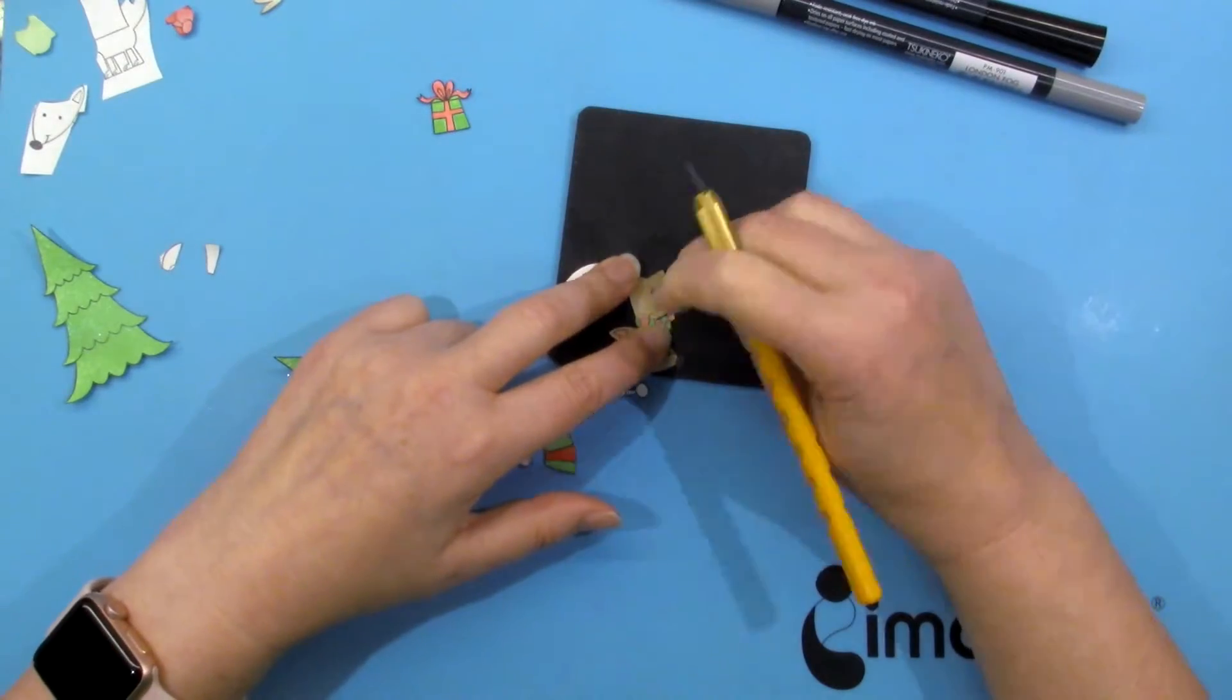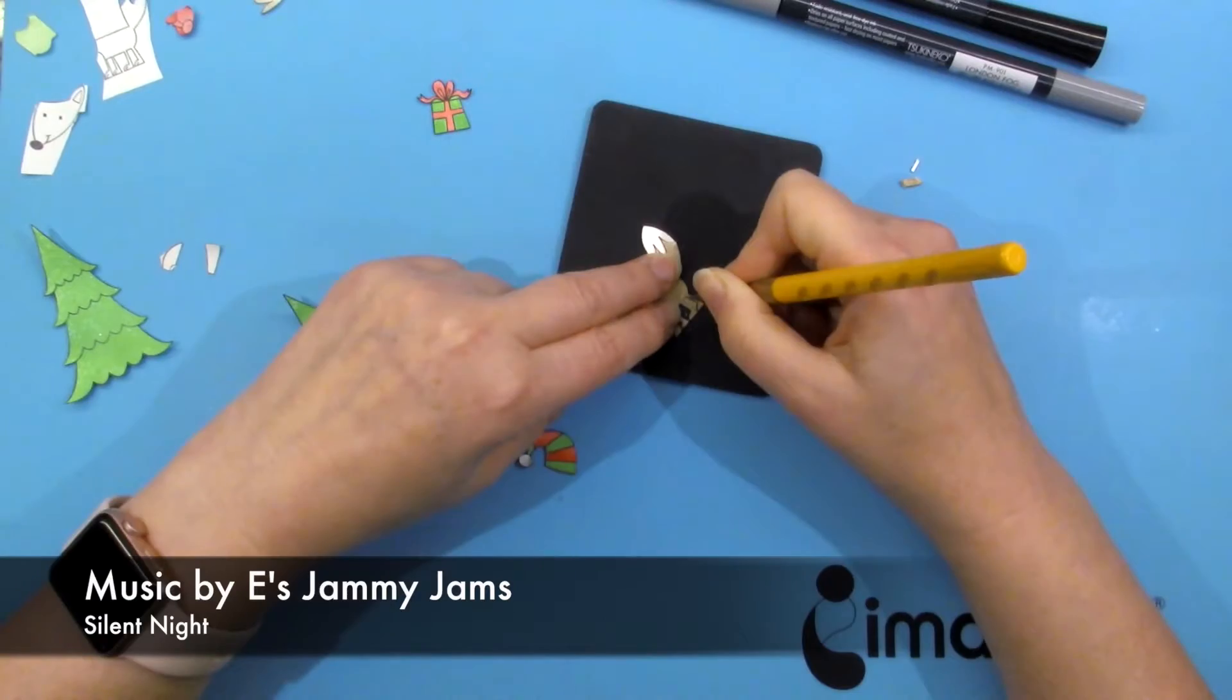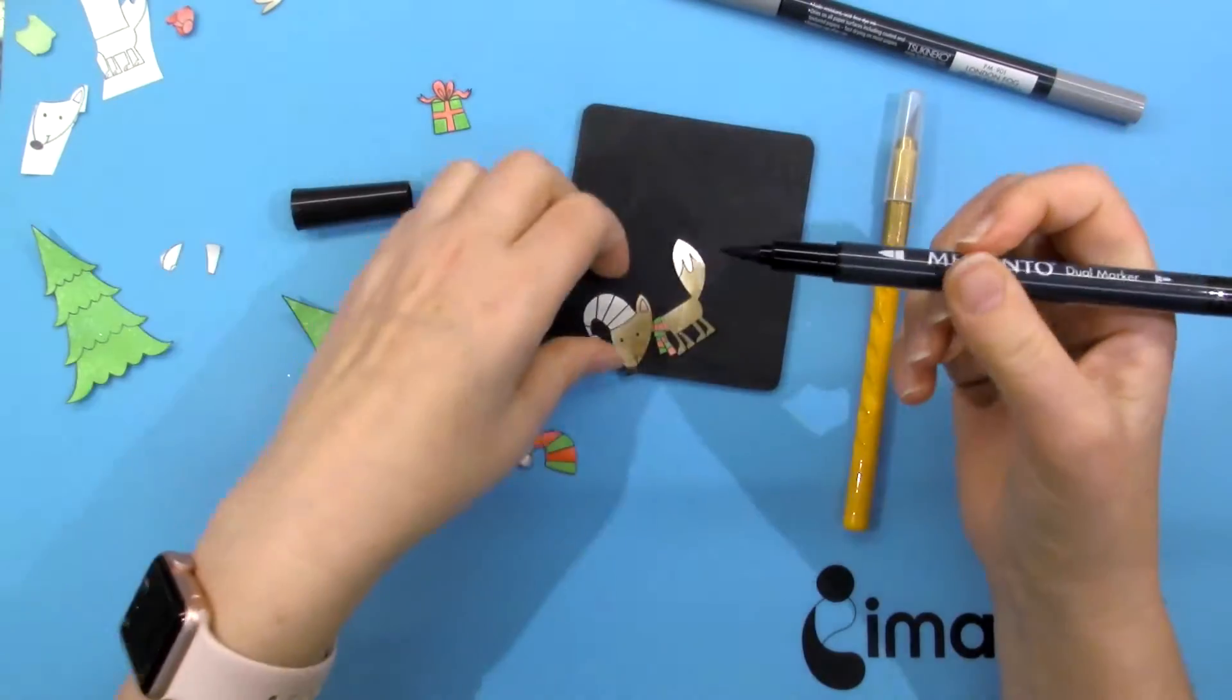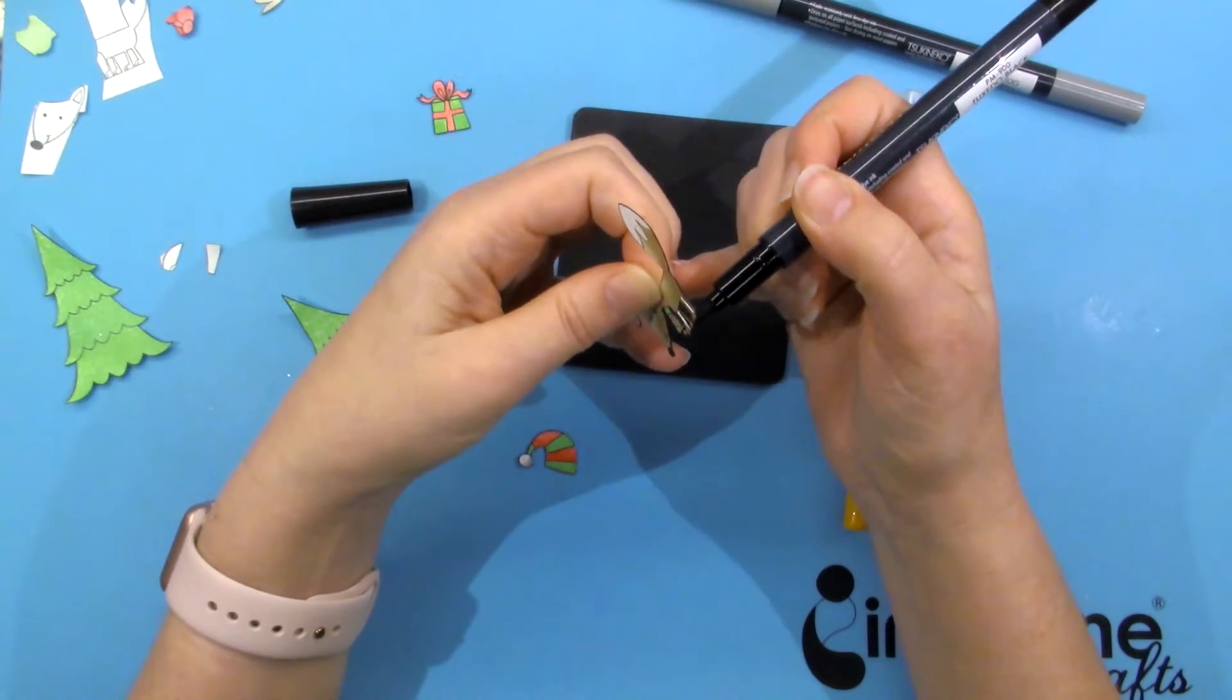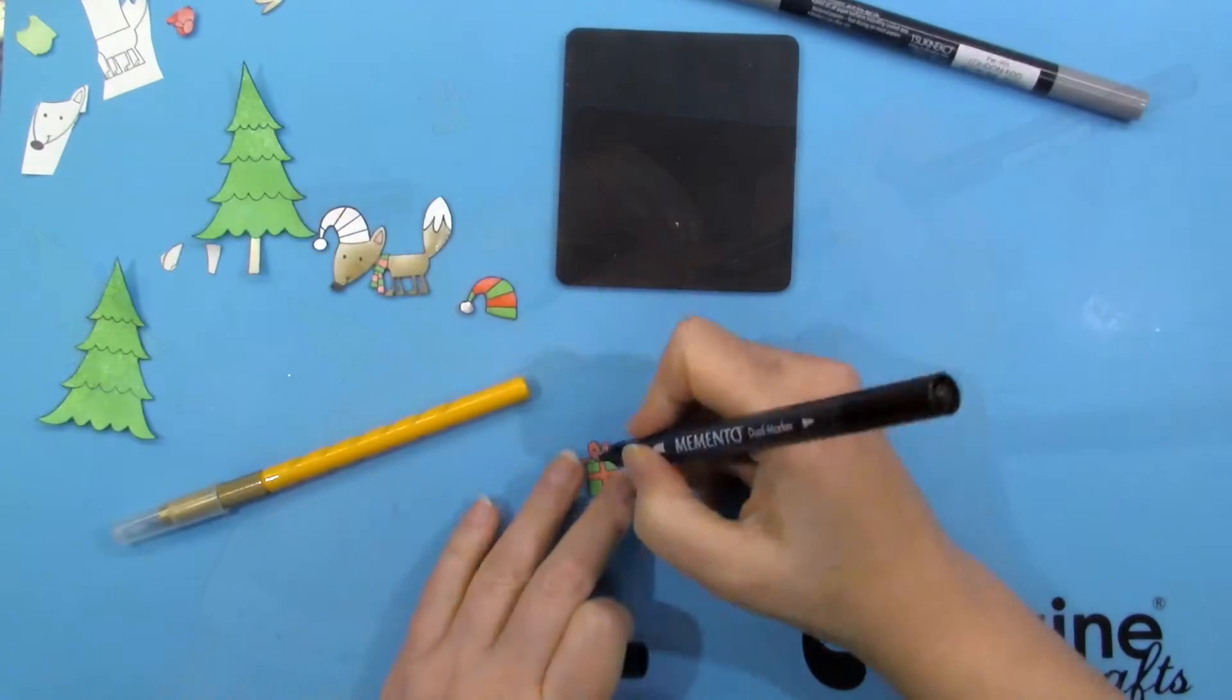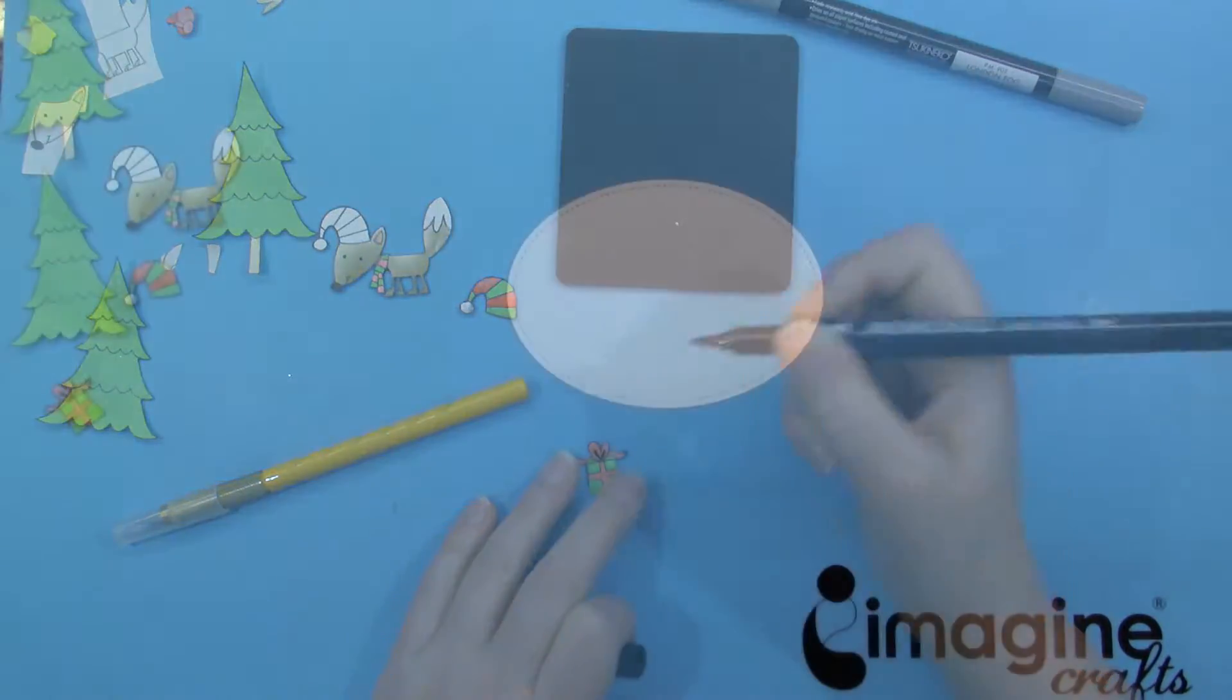I used a craft knife to get into the little areas that I couldn't cut out with the scissors. These areas are just a little too small to cut out, so I decided to color them in with my Memento Marker.